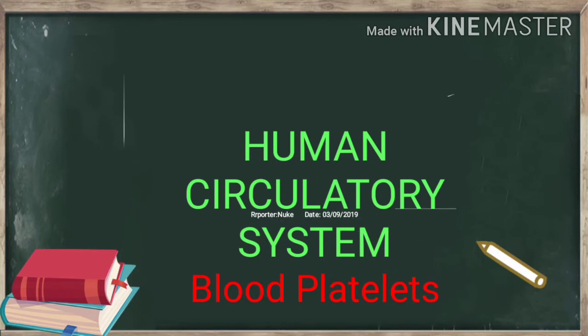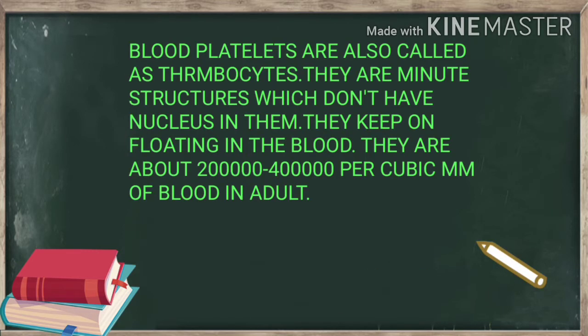Today we are going to read about blood platelets. Blood platelets are also called thrombocytes. They are minute structures which don't have a nucleus in them. They keep on floating in the blood and are about two lakh to four lakh in number per cubic mm.